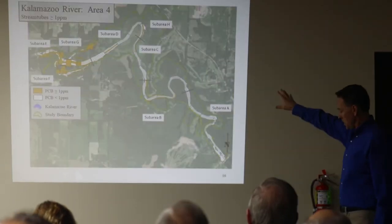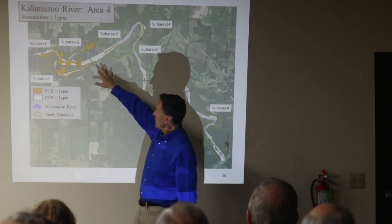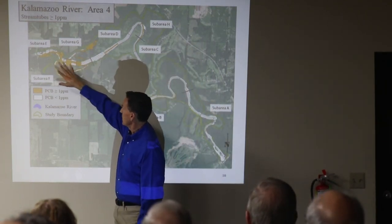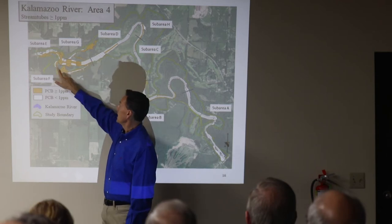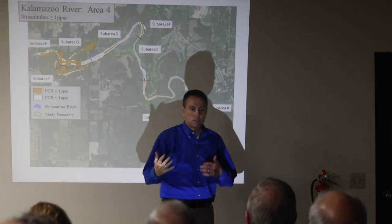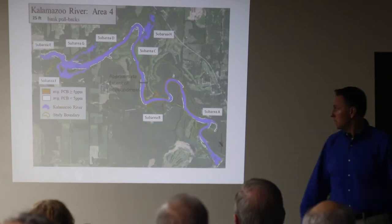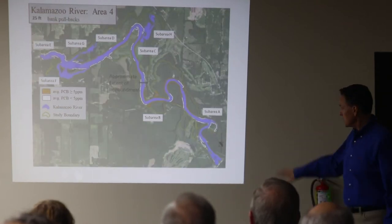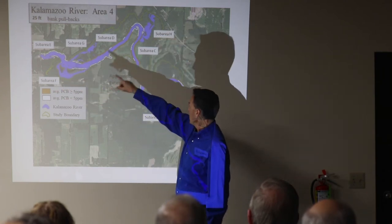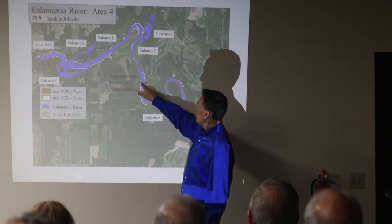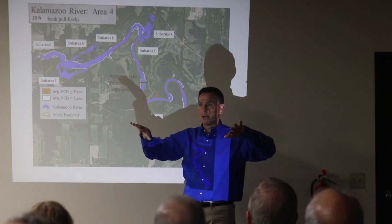This shows you, highlighted in orange, the areas that are greater than one part per million that probably have to be excavated — this is sub-area E, F, and G. You can visually see that from the map. The dam is there, and we're going to stabilize the banks from that point all the way downstream. All the banks need to be stabilized and addressed.